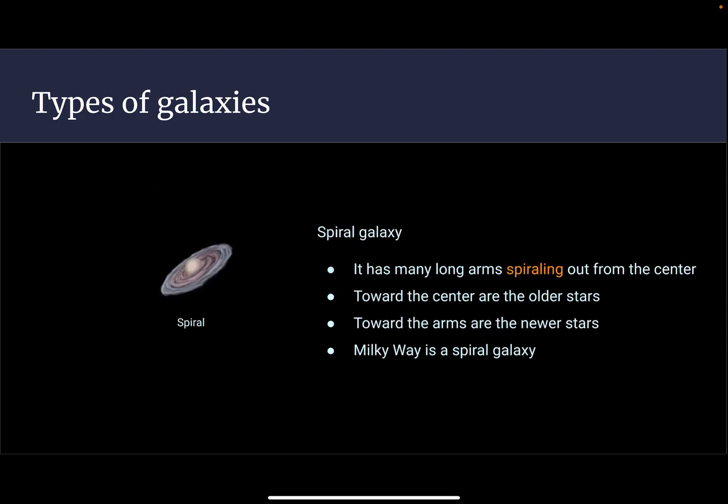A spiral galaxy has many long arms spiraling out from the center. The older stars are towards the center, while the newer stars are towards the arms. The Milky Way galaxy is a spiral galaxy.